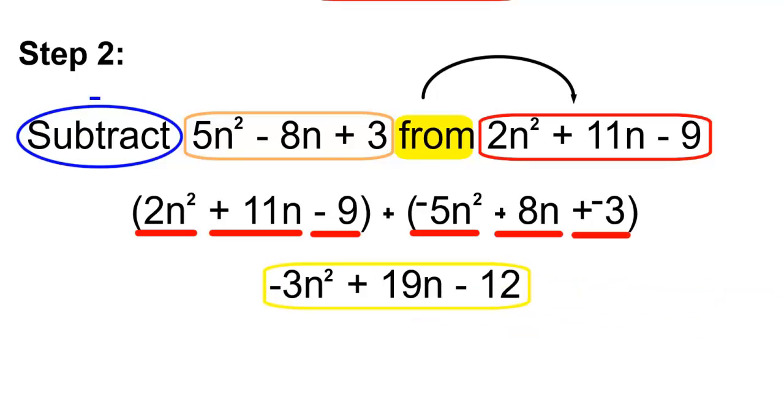So the answer will be negative 3n squared plus 19n minus 12.